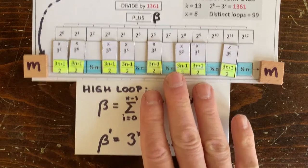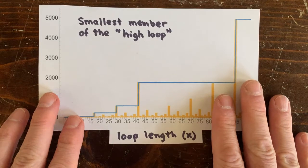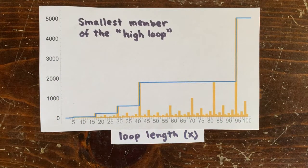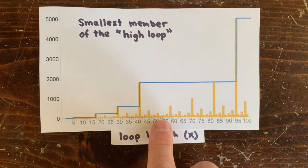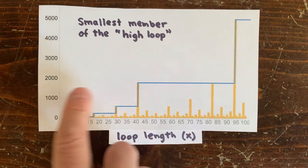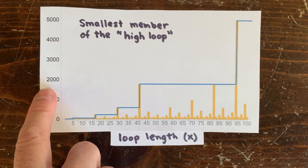Take the high loop, solve for m. And here are the results from x equals 1 to 100. So all the loops where x equals 51 involve tiny numbers. But at x equals 41, the high loop smallest member is close to 2,000.